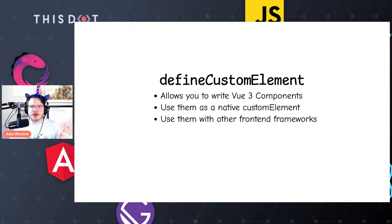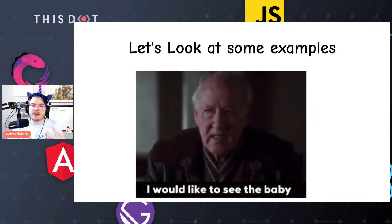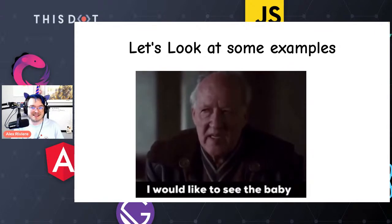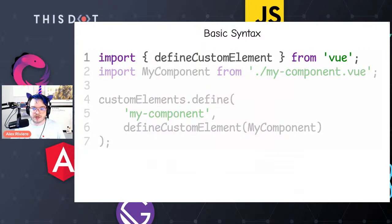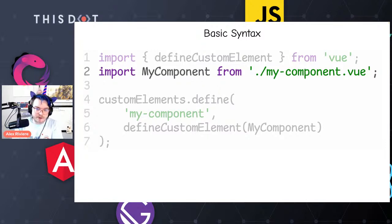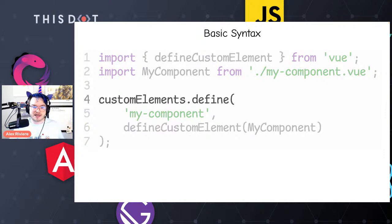I'm going to talk specifically about defineCustomElement and using it in Vue. The basic syntax starts with importing defineCustomElement from Vue — this is a Vue 3 thing, built into Vue 3.2. You then bring in your component — you can define it as a single file component and import it. To actually make the custom element, you use customElements.define, which is on the window object. This is the browser part — this is how we tell the browser: I'm going to make a custom HTML element.